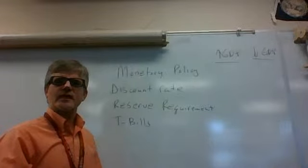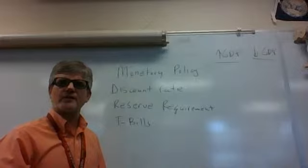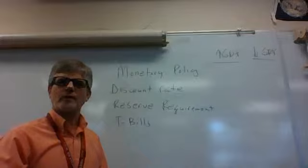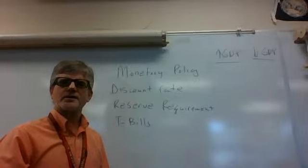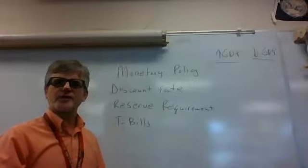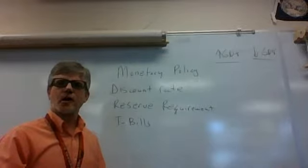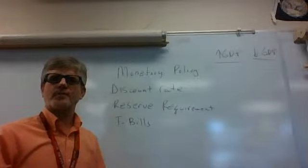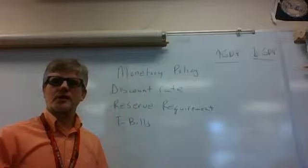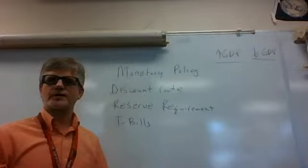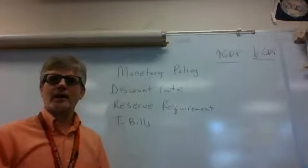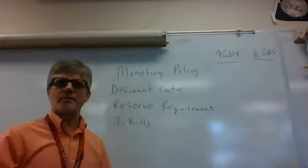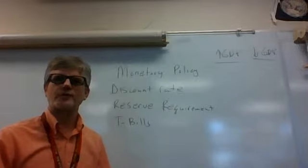The discount rate is the interest rate that member banks are charged by the Federal Reserve System — banks like Chase, Wells Fargo, Citibank, or Bank of America. This is what the Federal Reserve charges them for borrowing, so this is their cost of money and loans. If the discount rate goes up, they'll pass on the higher cost to consumers with higher loans, higher credit cards, higher personal loans. If the discount rate goes down, they'll pass the lower rates down to consumers and businesses.